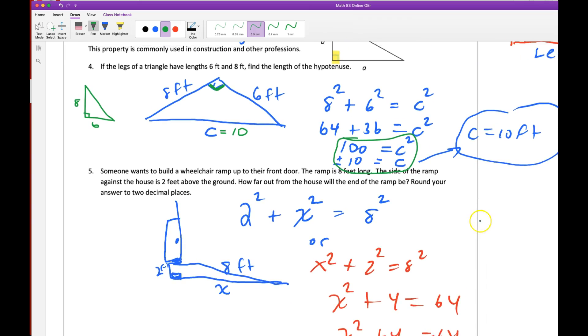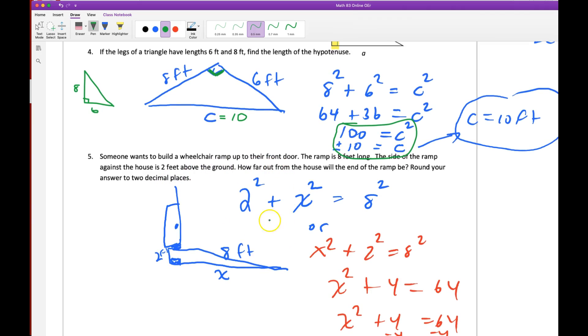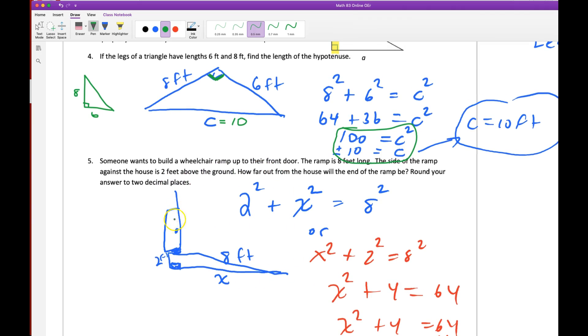Let's try another one. Here's the situation. Building a wheelchair ramp to a door. Here's the ramp. You can imagine the ramp. Right triangle. We know the height is 2 here. We want to know—we know the length of the ramp is 8. So we're really looking for this missing distance there.